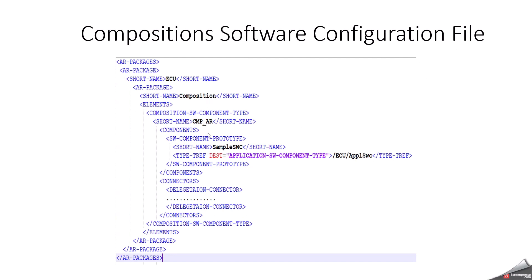The Composition Software Configuration file is mainly a grouping of software components. Here I have mentioned one software component, and it can have connectors — especially delegation connectors — for creating inner ports or outer ports. It can have multiple software component prototypes and multiple connectors, meaning multiple delegation connectors as well.